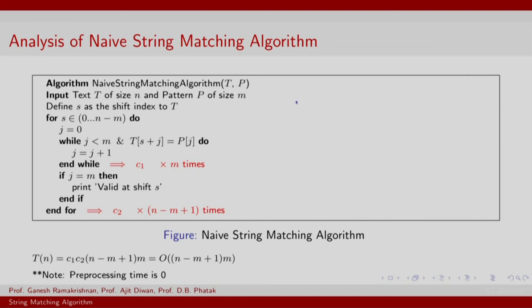The worst case situation is as follows, T is A, A, A, A, A and P is say A, A, M is 2, N is 6. You are going to scan all the positions of P for every position in T because match occurs at all N minus M plus 1 positions.